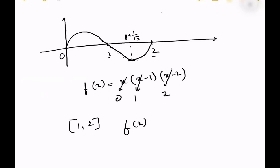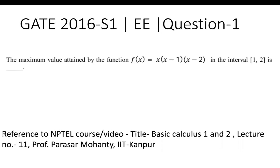Since f(x) is only negative in the interval 1 comma 2, the maximum value in this interval from 1 to 2 will be zero. So that will be your answer — the maximum value is zero.